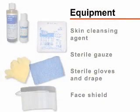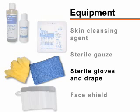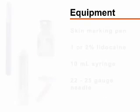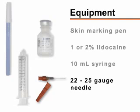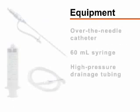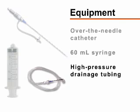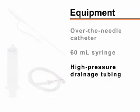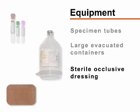For sterile preparation and administration of anesthesia, you will need a skin cleansing agent, sterile gauze, sterile gloves and drape, and a face shield. You will also need a skin marking pen, one or two percent lidocaine, a 10 milliliter syringe, and a 22 or 25 gauge needle. For collection of ascitic fluid, you will need an over-the-needle catheter device, a 60 milliliter syringe, high pressure drainage tubing, specimen tubes, large evacuated containers, and a sterile occlusive dressing.